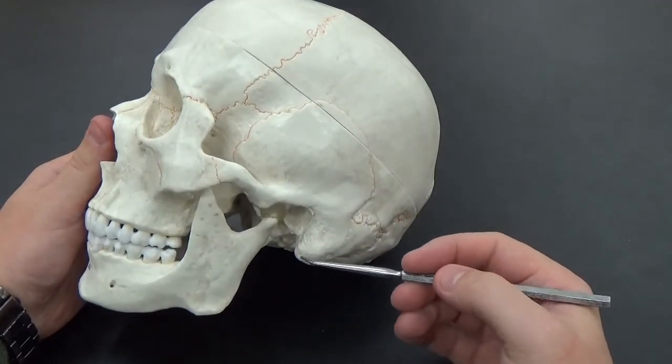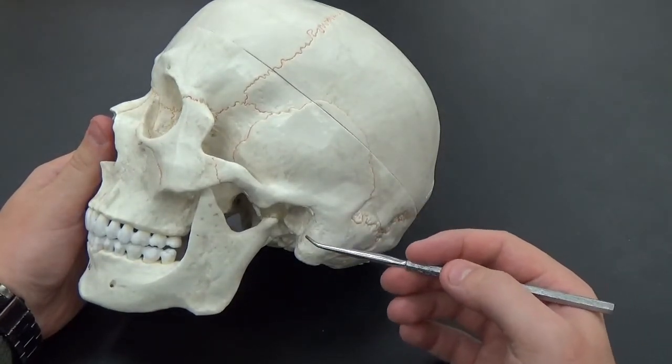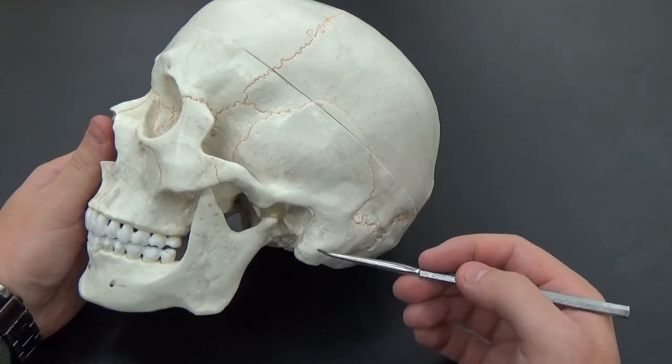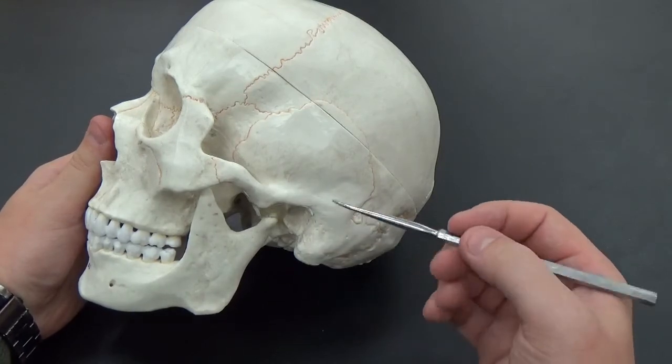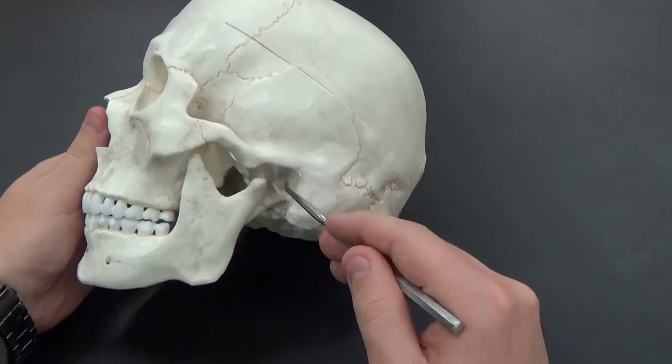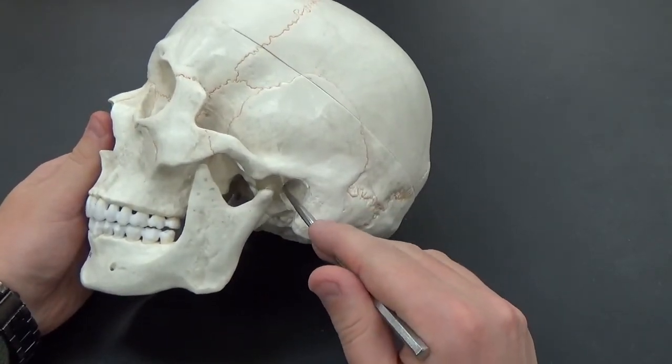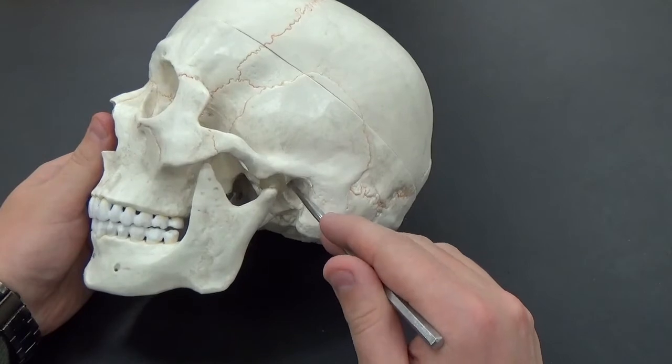You can see down here, this large protrusion here, that's the mastoid process. You have a large hole here where your ear would be, this is your external auditory meatus.